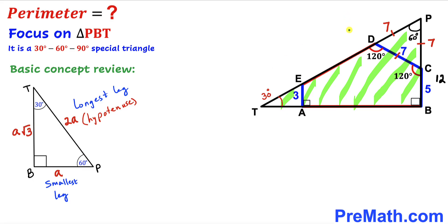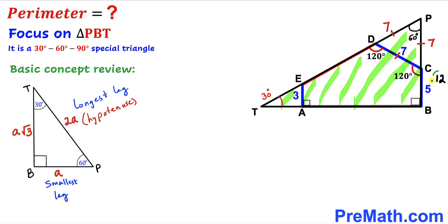Returning to this problem: the smallest leg of triangle PBT is 12. Therefore, the longest leg PT has to be twice that, which is 24. And the third leg BT is going to be 12 times the square root of 3.